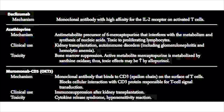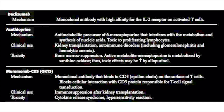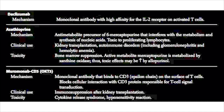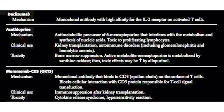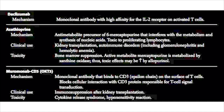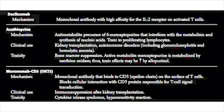Next, we have azathioprine, an anti-metabolite precursor of 6-mercaptopurine, or 6-MP. Both 6-MP and azathioprine are purine analogs that interfere with the synthesis of nucleic acids. Rapidly proliferating lymphocytes rely on very rapid DNA replication, and with purine analogs present, that DNA replication is stifled, causing toxicity to any proliferating lymphocyte.